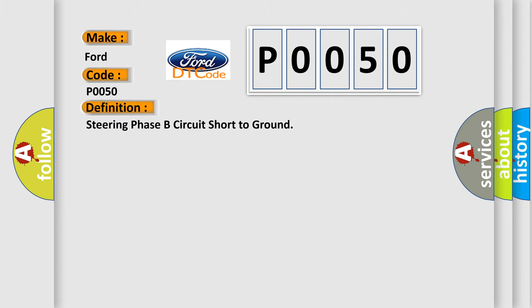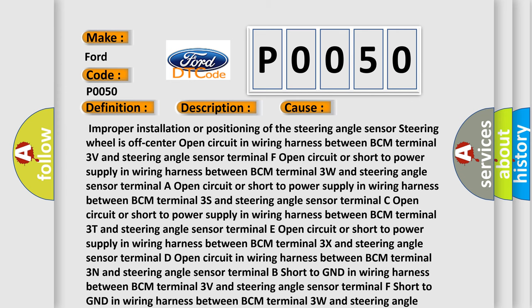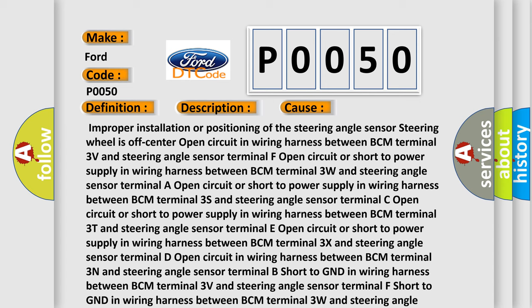The basic definition is: Steering Phase B Circuit Short to Ground. This is a short description of this DTC code: short to GND in wiring harness between BCM and steering angle sensor Terminal 3W. This diagnostic error occurs most often in these cases: improper installation or positioning of the steering angle sensor, or the steering wheel being off-center.